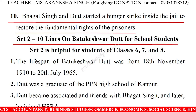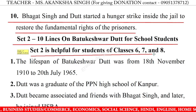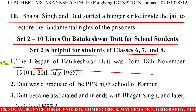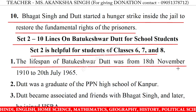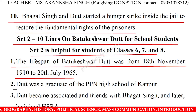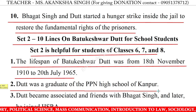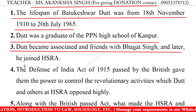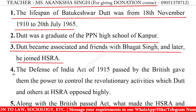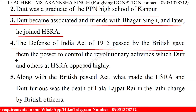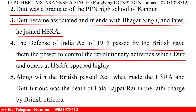10 Lines on Batukeshwar Dutt for school students. Set 2 is helpful for students of classes 6, 7 and 8. 1. The lifespan of Batukeshwar Dutt was from 18th November 1910 to 20th July 1965. 2. Dutt was a graduate of the PPN High School of Kanpur. 3. Dutt became associated and friends with Bhagat Singh and later joined HSRA. 4. The Defence of India Act of 1915, passed by the British, gave them the power to control revolutionary activities, which Dutt and others at HSRA opposed highly.